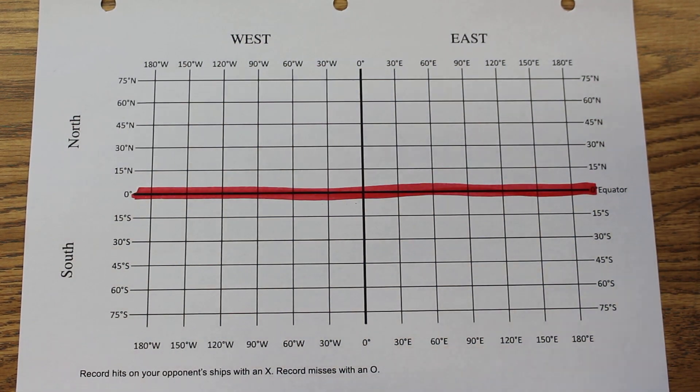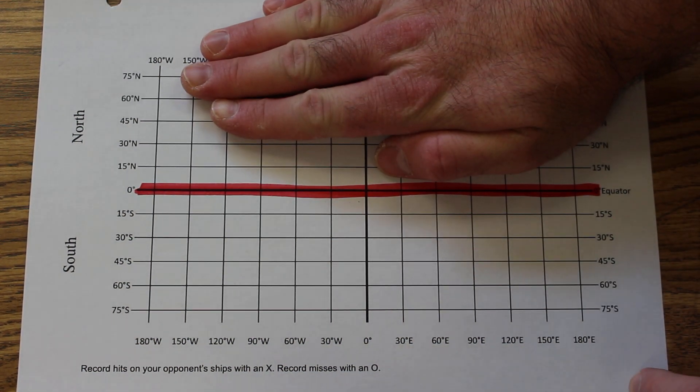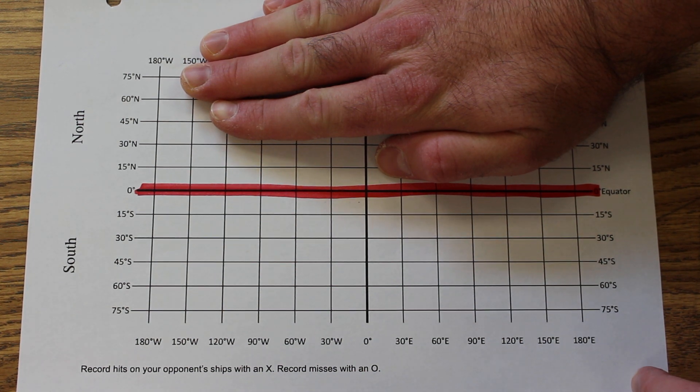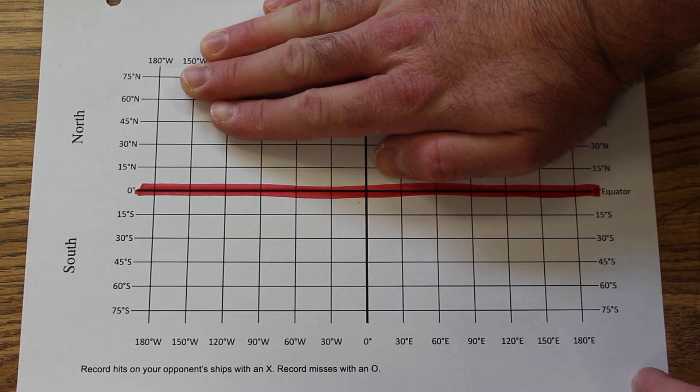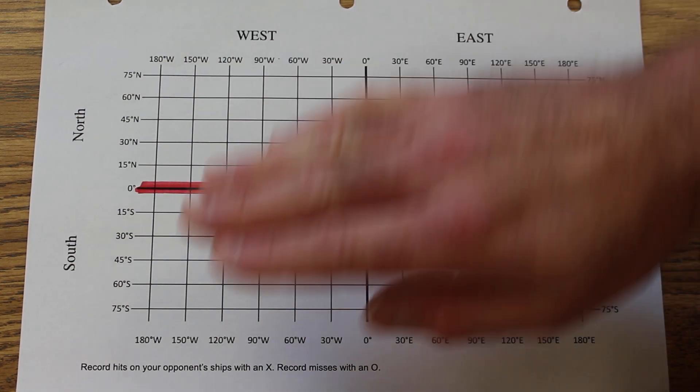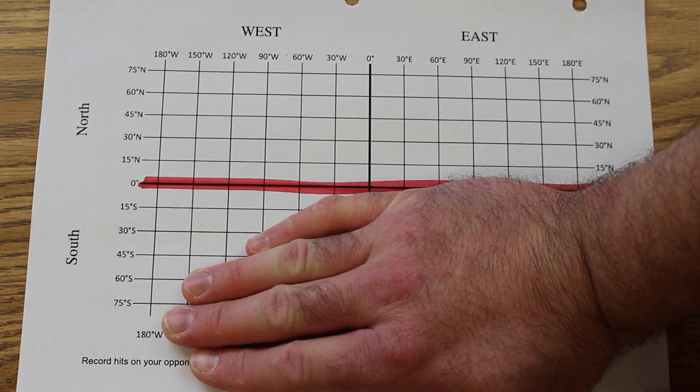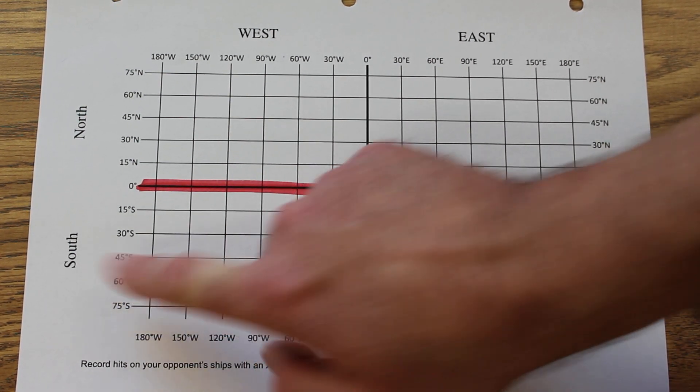The equator divides the earth into a northern section or northern half called the northern hemisphere and a southern half called the southern hemisphere.